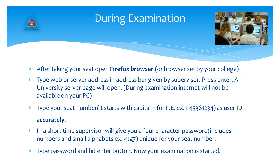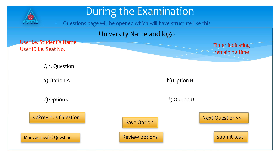Type the password and hit the Enter button. Now your examination has started. The questions page will open, which will have a structure like this: on the top left corner there will be the student's name and user ID (seat number), and on the top right corner there will be a timer indicating the remaining time. There will also be the question, options, and other controls for the examination.